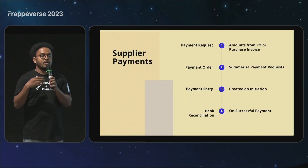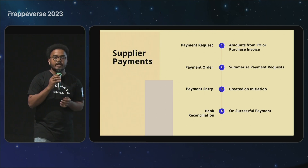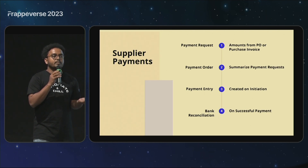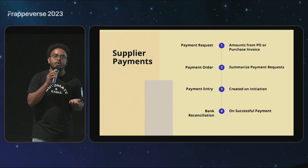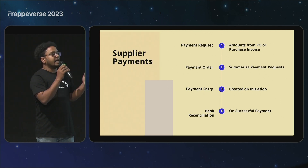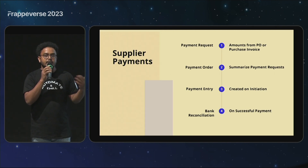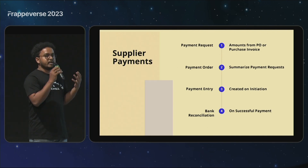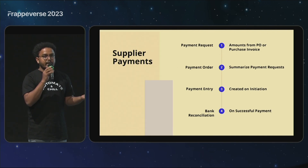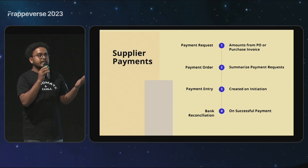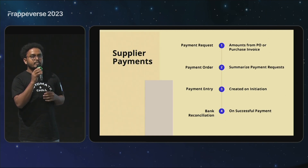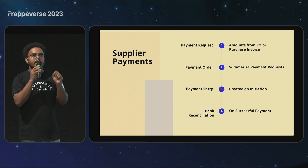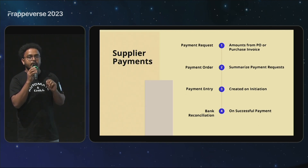With this integration, for all vendor payments — whether advances over the purchase order or outstanding payments over purchase invoices — you just create a payment request. The purchase team can keep creating payment requests, and the accounts team can come in, aggregate all the payment requests together, and process the payout. During that payout, the payment entries will be automatically created, and based on whether it is successful or unsuccessful on the bank side, they'll be either cancelled or updated with the UTR numbers. You'll have the payment entry on the right day with the UTR number updated.